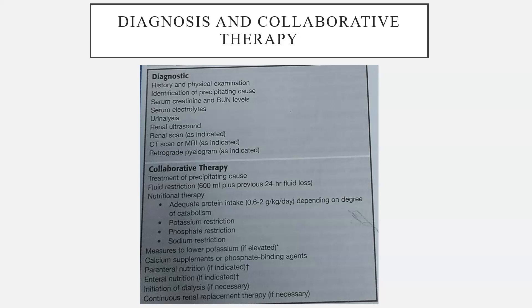The diagnostic tests include history and physical examination to identify the precipitating cause. Serum creatinine and BUN levels need to be checked, along with serum electrolytes, urinalysis, renal ultrasound, renal scan, CT scan or MRI, and retrograde pyelogram as indicated.